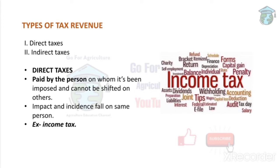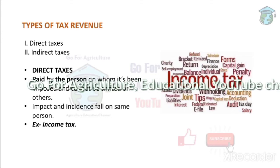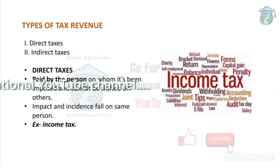Direct tax is paid by a single person — for example, income tax. Income tax means the person shows the government that his income does not exceed the limit set by the Finance Ministry. This tax is paid by a single person only, which is why it is called a direct tax.